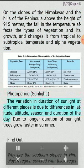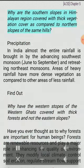Photoperiod (Sunlight): The variation in duration of sunlight at different places is due to differences in latitude, altitude, season and duration of the day. Due to longer duration of sunlight, trees grow faster in summer. Find out: why are the southern slopes in the Himalayan region covered with thicker vegetation cover as compared to the northern slopes of the same hills?